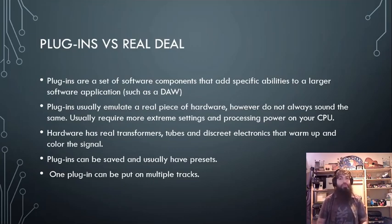So by more extreme settings, what I mean is a typical gain reduction on an analog compressor could be something negative three, negative five, and it's going to be pretty dramatic. You can hear that compression. Whereas a plug-in, negative five to negative seven, sometimes even negative nine can start to be where you really kind of hear that compressor kick in. So just keep that in mind as you start messing with plug-ins versus the real deal.